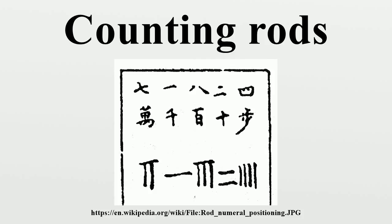Unicode 5.0 includes counting rod numerals in their own block in the Supplementary Multilingual Plane, from U+1D360 to U+1D37F. The code points for the horizontal digits 1 to 9 are U+1D360 to U+1D368, and those for the vertical digits 1 to 9 are U+1D369 to U+1D371. The former are called unit digits and the latter tens digits, which is opposite to the convention described above. Zero should be represented by U+3007 and the negative sign by U+20E5; since these are included in the SMP, font support may still be limited.